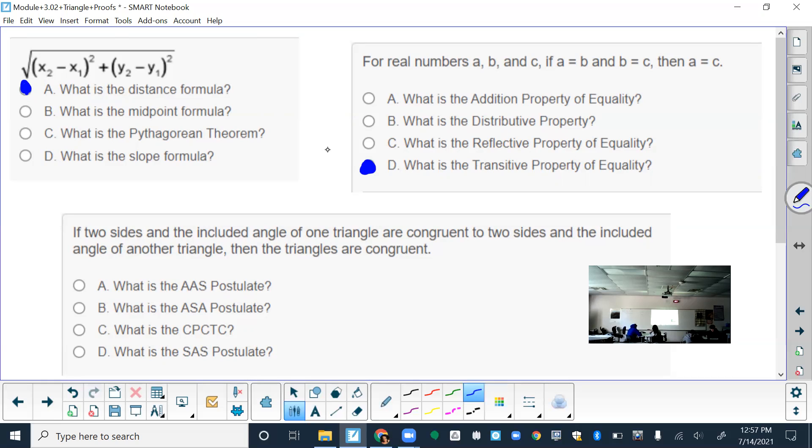And then the bottom, if two sides and the included angle of one triangle are congruent to two sides and the included angle of another triangle, then the triangles are congruent. So two sides and the included angle. That would best represent which postulate? The only one that says two sides is the last one. Two sides would be S and S, so that has to be side angle side, SAS.